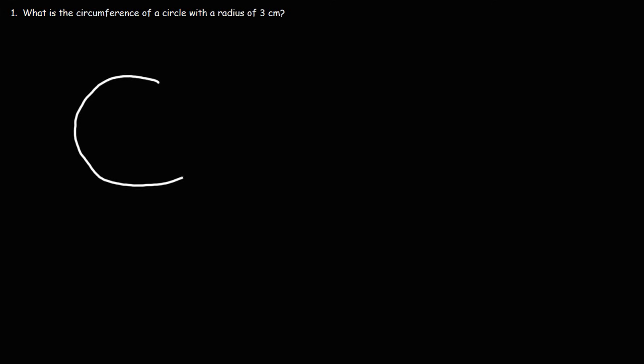In this video, we're going to talk about how to calculate the circumference of a circle. In this example, we're given the radius of the circle, but let's draw a picture. The radius is the distance between the center of the circle and any point on the circle. And in this example, that's 3 centimeters.